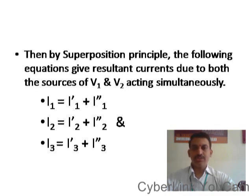This is a simple example which we understood to understand the superposition principle. According to superposition principle, the effect of both sources is equal to the summation of individual effects. Hence we are getting three different equations for three different branch currents. Thank you.